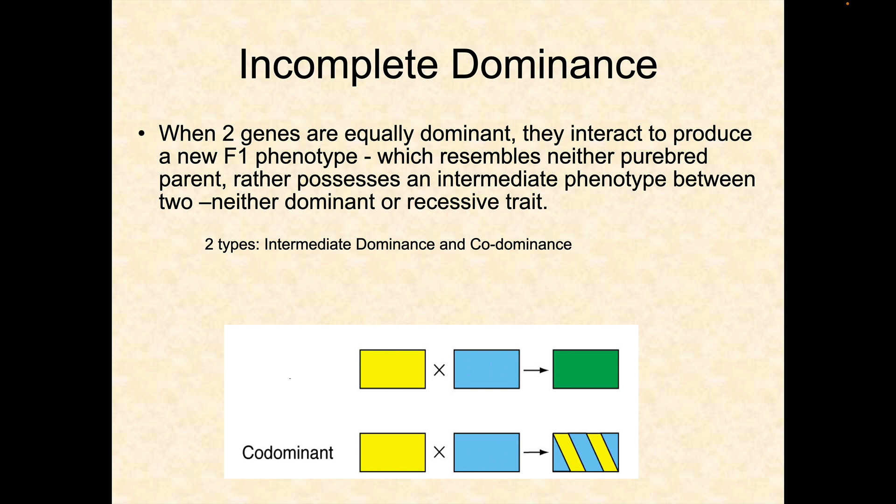Incomplete dominance is like if you've got yellow and blue together and it produces green — the intermediate. You can also have codominance, where both traits are expressed at the same time. So if you have yellow and blue together, you get yellow and blue stripes — something like that.